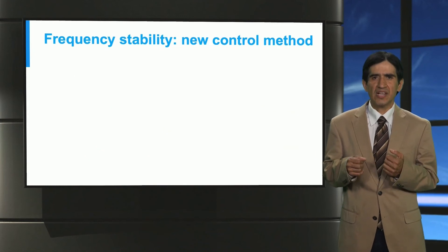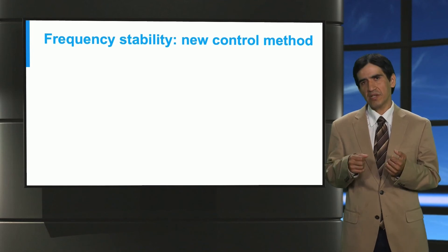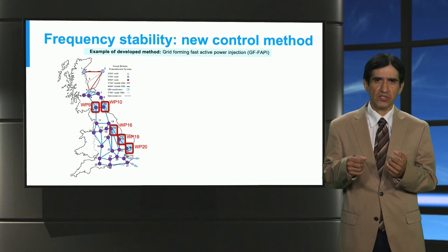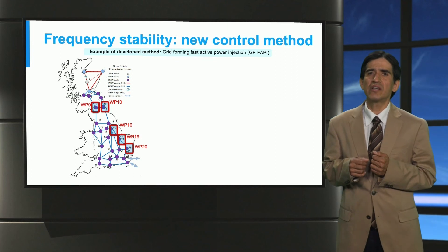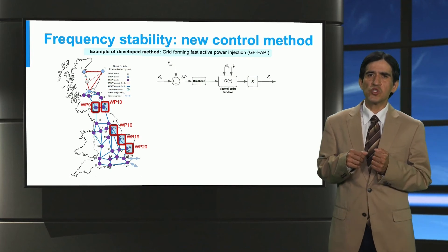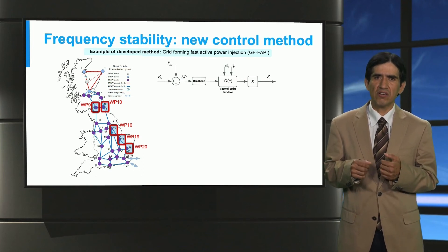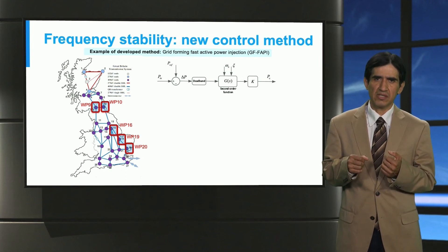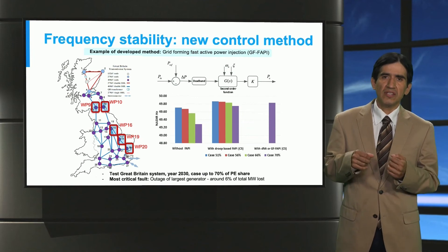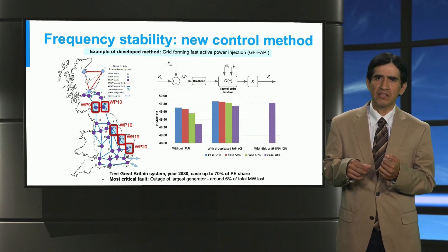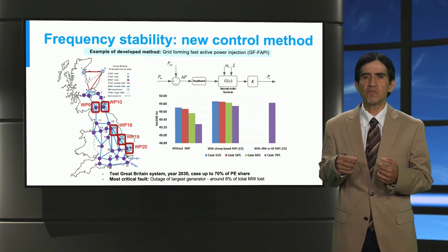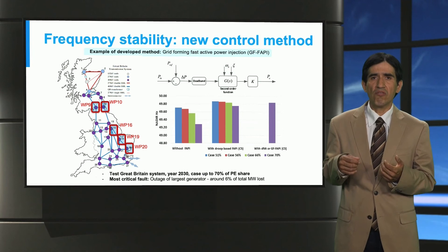Now, let's talk about example upgrades of control systems needed for secure operations. Firstly, we discuss a frequency stability new control method. This particular example concerns grid-forming fast active power injection. This emerging method is superimposed on the control structure of the grid side converter, with the goal of performing a very fast adjustment of the active power injection from a wind generator. This adjustment is done based on measured deviations of active power, which are passed through a deadband and a second order transfer function. Both functions are tuned on a system-dependent basis. The example, based on simulations conducted on a test system representing the Great Britain system, shows that an increase of wind generation share up to 70 percent can be feasible without having large under-frequency deviations, also known as frequency Nadir, if grid-forming fast active power injection is performed by a set of wind turbines, which can play a major role in the stabilization of the system frequency.